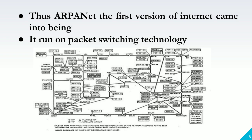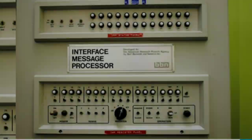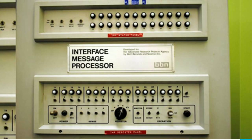Thus ARPAnet — the first version of the internet — came into being. It ran on packet switching technology. The first message sent across the network was supposed to be the word 'login,' but reportedly the link between Stanford and the University of California crashed on the letter G. So the first message sent was actually just 'lo.' Here you can see pictures of the ARPAnet and the device that was using ARPAnet.